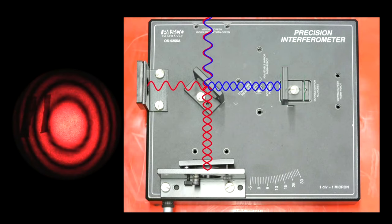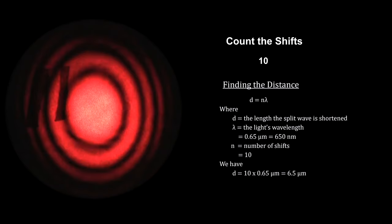As we continue to shorten the path for the split wave, we can count the number of fringe shifts. In our experiment, we used red light with a wavelength of 650 nanometers. Knowing the wavelength and counting the shifts gives us the distance. In this controlled experiment, each shift represents a distance of 650 nanometers. Shorter wavelengths will enable us to measure still smaller distances.